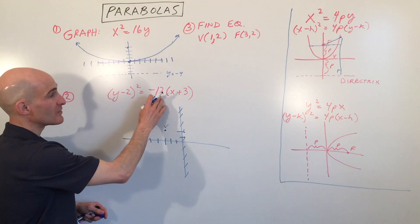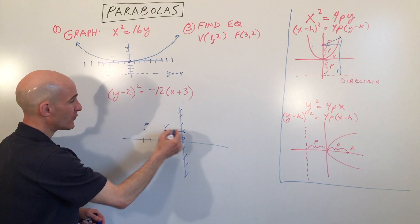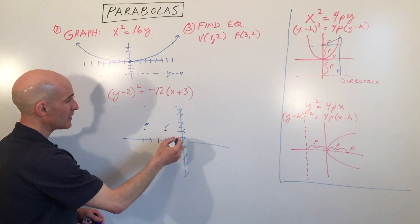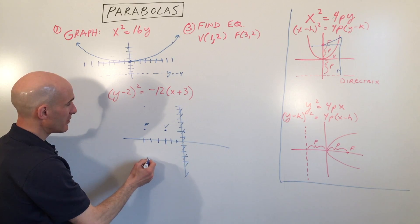Now remember, at the level of the focus, it's going to be 4p wide. So it's going to be 12 wide. So I'm going to go up 6 and down 6 from the focus. 1, 2, 3, 4, 5, 6. So right about there. And 1, 2, 3, 4, 5, 6, right about there.